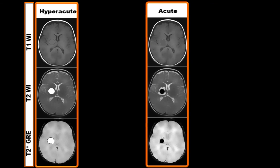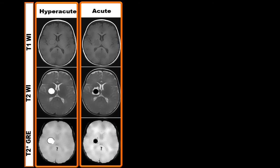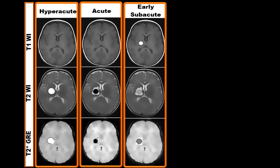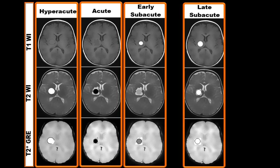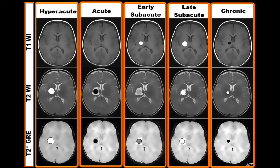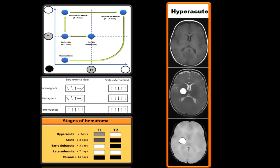Now we will look at real patient MRI images of the brain at different stages. Hyperacute: isointense in T1 and hyperintense in T2. Acute: iso to hypointense in T1 and hypointense in T2. Early subacute: hyperintense in T1 but isointense in T2. Late subacute: hyperintense in both T1 and T2. Chronic: hypointense in T1 and hyperintense in T2.